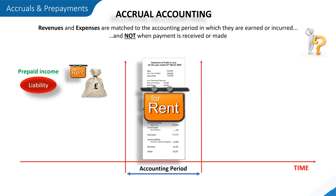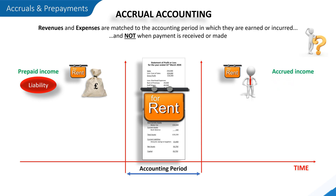Sticking for a moment with our example of rental income, if at the end of the same financial year we have another tenant who's in arrears with their rent in this accounting period, this would be an example of accrued income — that is, income that belongs to or has been earned in an accounting period but which has not been received. Accrued income appears as an asset on the statement of financial position, as it represents a future benefit to the company in the form of a future cash receipt.